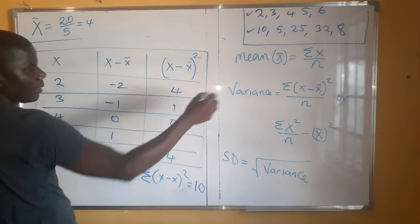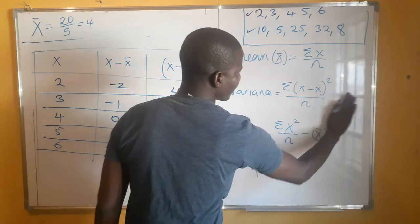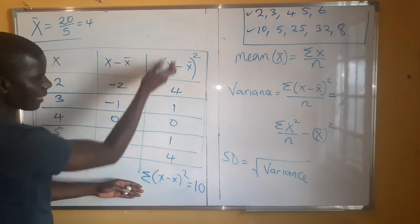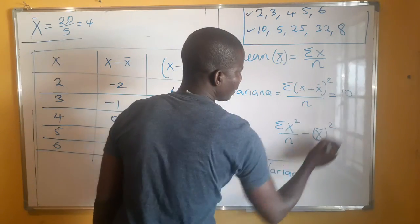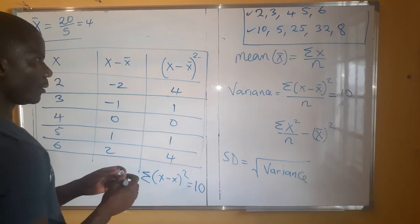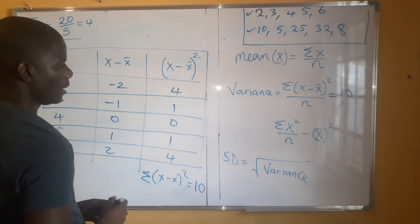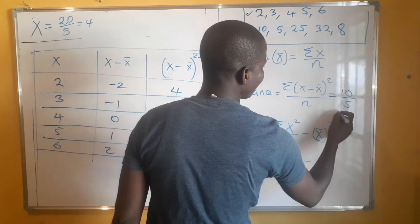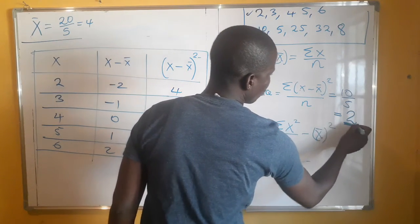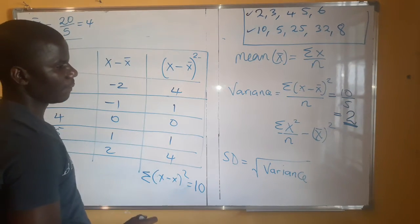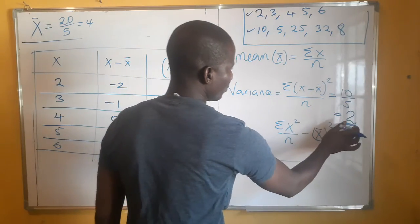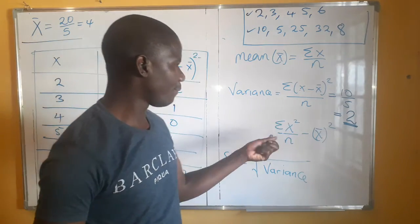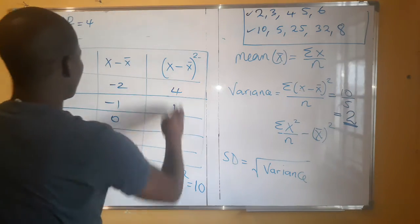Using the first formula, variance equals the summation — which we found to be 10 — divided by n, which is 5. So variance equals 10 over 5, which gives us 2. Our variance is 2 using this formula. Now our job is to verify that the second formula also gives us 2.